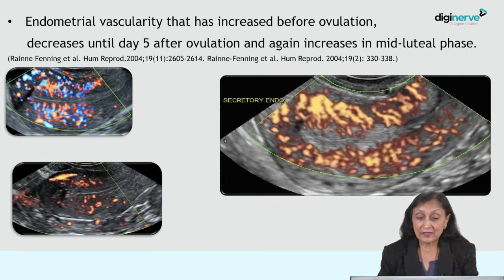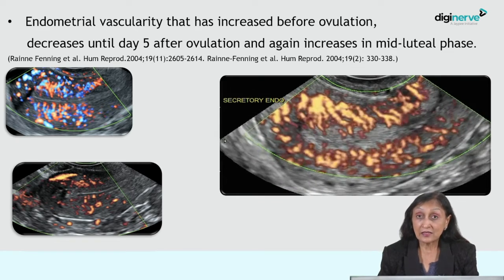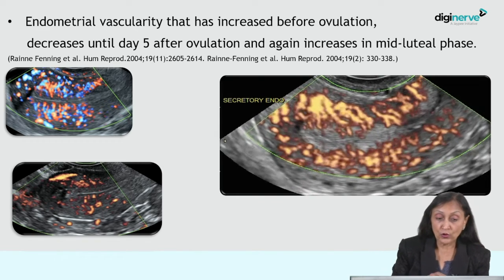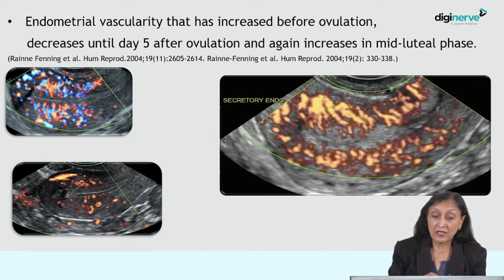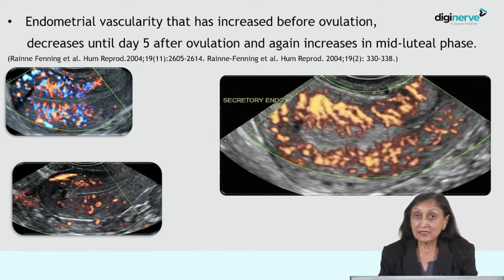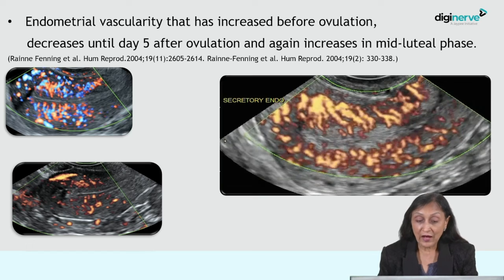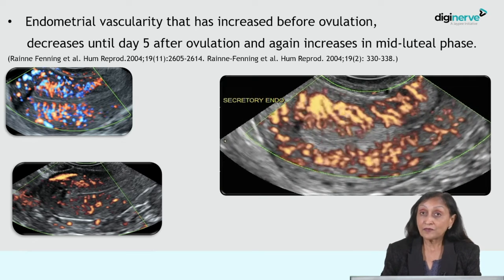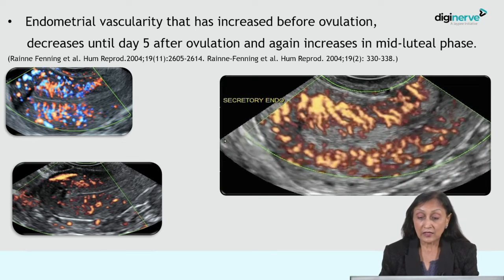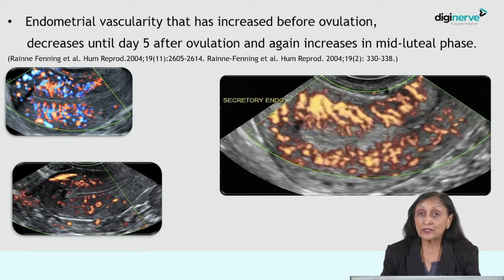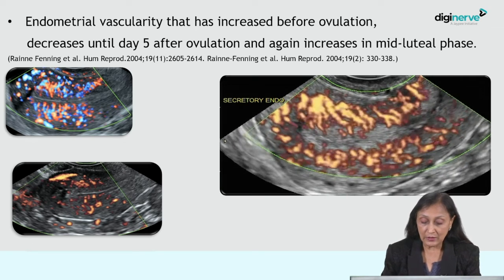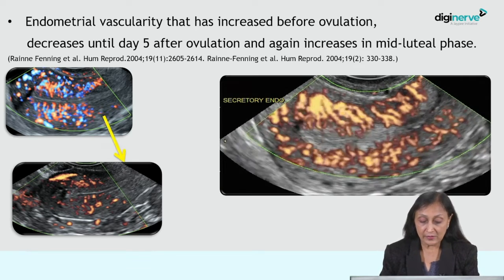Endometrial vascularity, which has increased before ovulation, decreases until day five after ovulation and again increases in the midluteal phase.